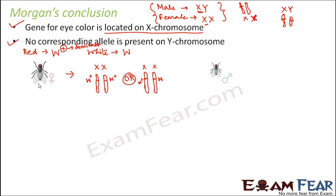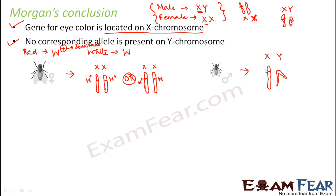For a red-eyed male Drosophila, there is one X chromosome and one Y chromosome. The X chromosome must carry w+ for the fly to be red-eyed. Whether the male is red-eyed or white-eyed depends entirely on the X chromosome, because the Y chromosome does not carry the gene for eye color at all.